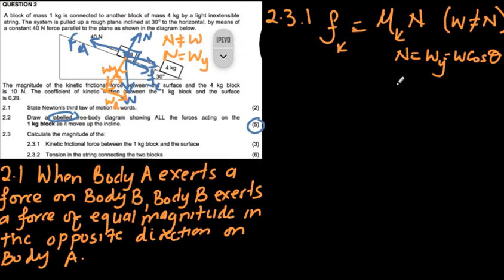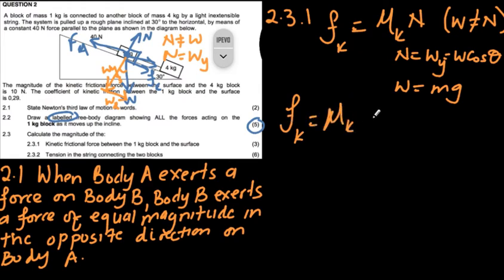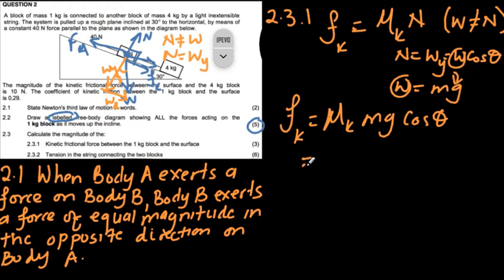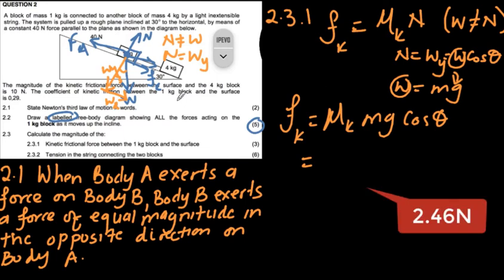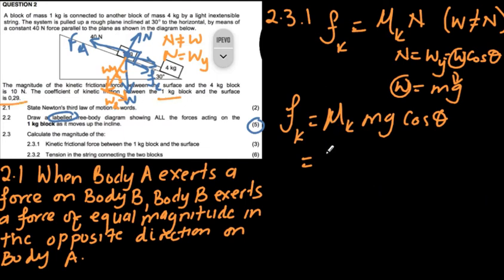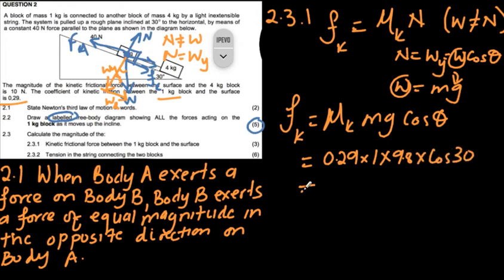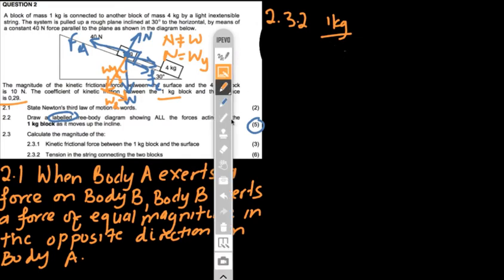Substituting into our equation: fk = μk × N = μk × mg cos θ. For the 1 kg block, μk = 0.29, mass = 1 kg, g = 9.8 m/s², and θ = 30°. This gives fk = 0.29 × 1 × 9.8 × cos 30° = 2.49 newtons.